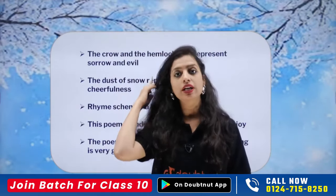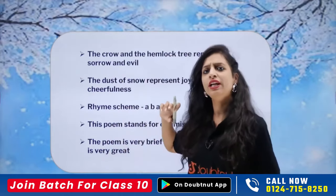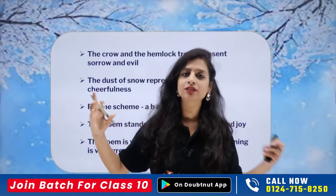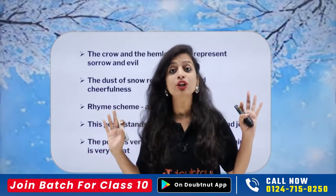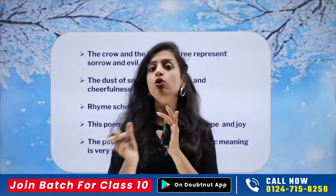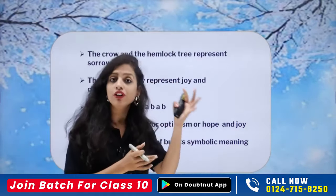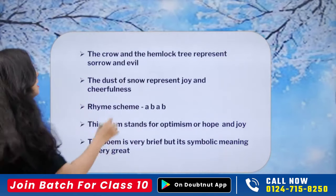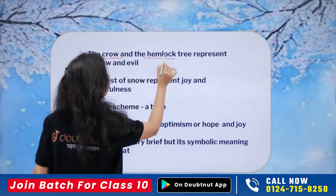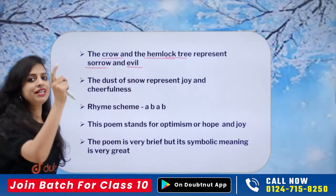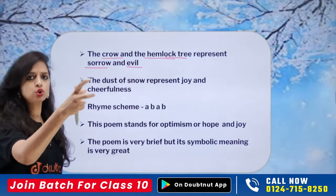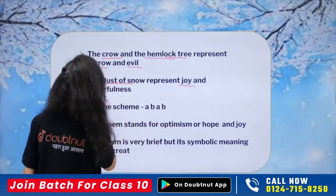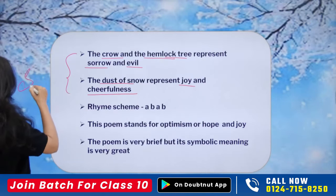Everyone goes through their own phases in life. When we are in a bad phase, we need that shift too. Now let's move to the summary. As I explained, crow and hemlock tree represent sorrow and evilness — the negative things. The dust of snow, on the other hand, represents joy and cheerfulness. So two symbols are used here for you.